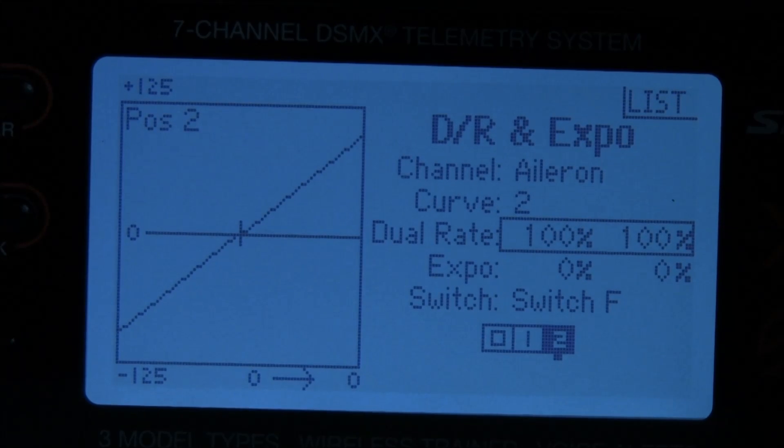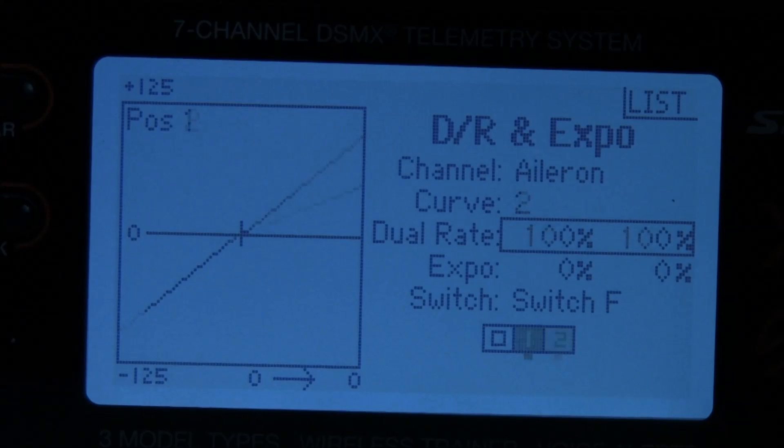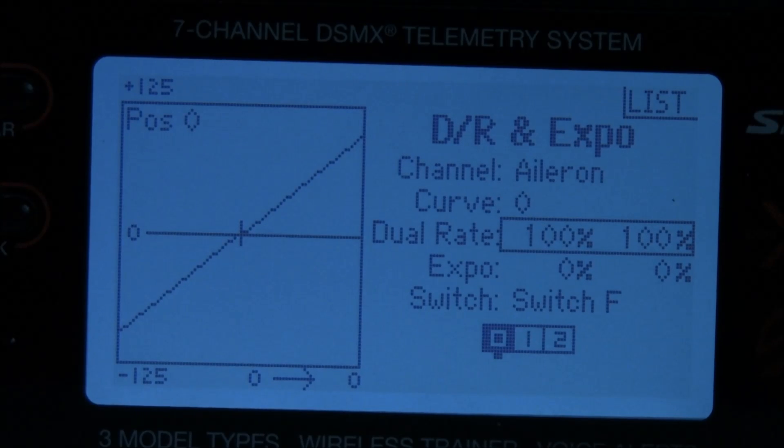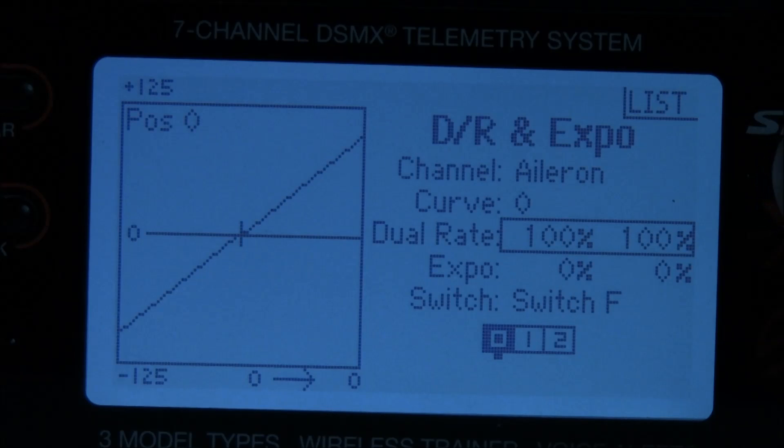And now your dual rate on position one is 50 percent and position two is at 100 percent. But we have a tri rate set here right now. So let's go to position zero. And you see the dual rate comes back up as a default 100 percent because you have not programmed it.